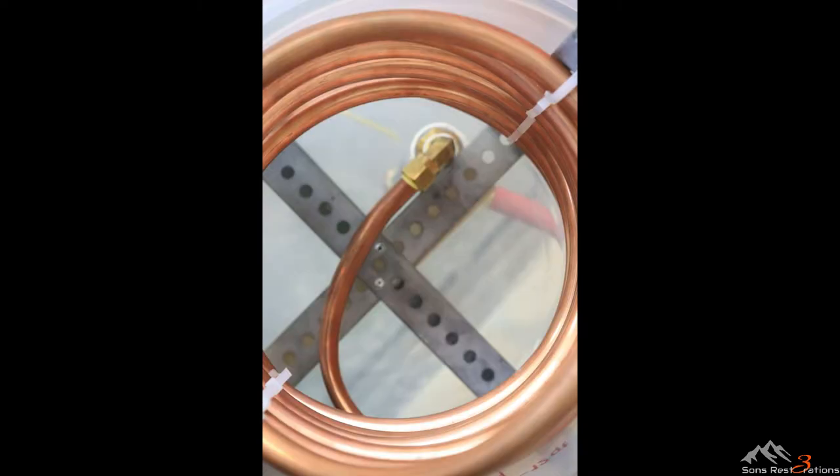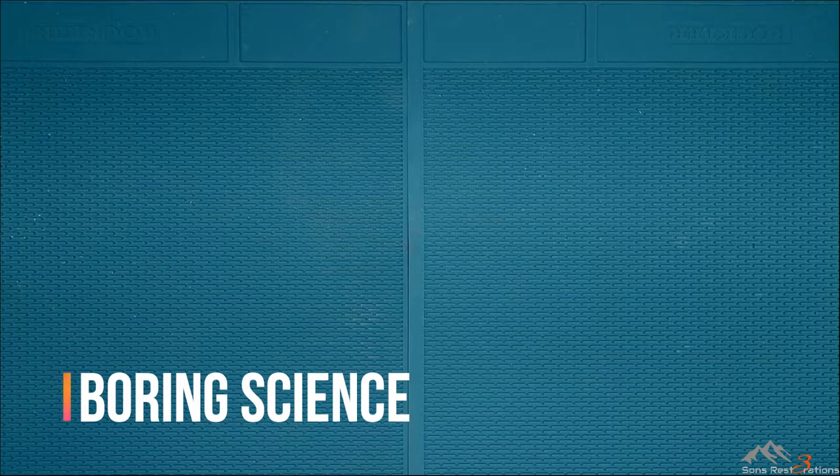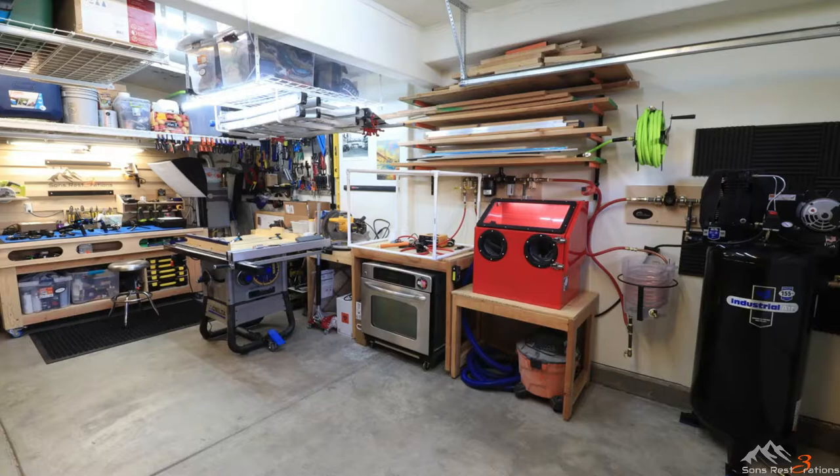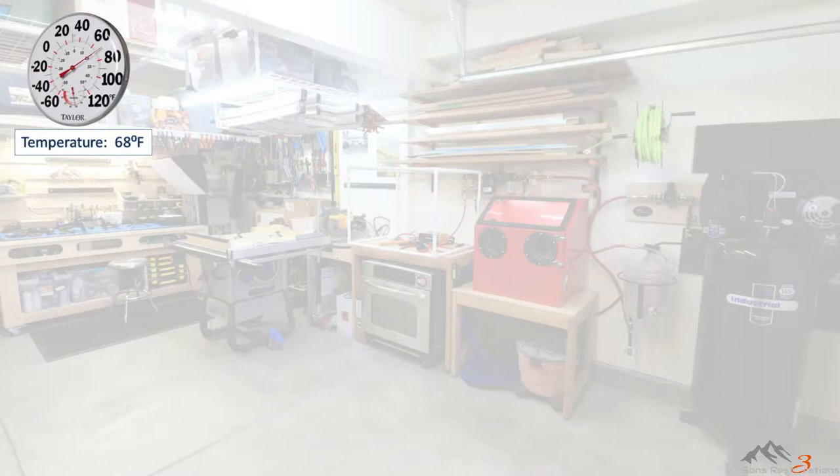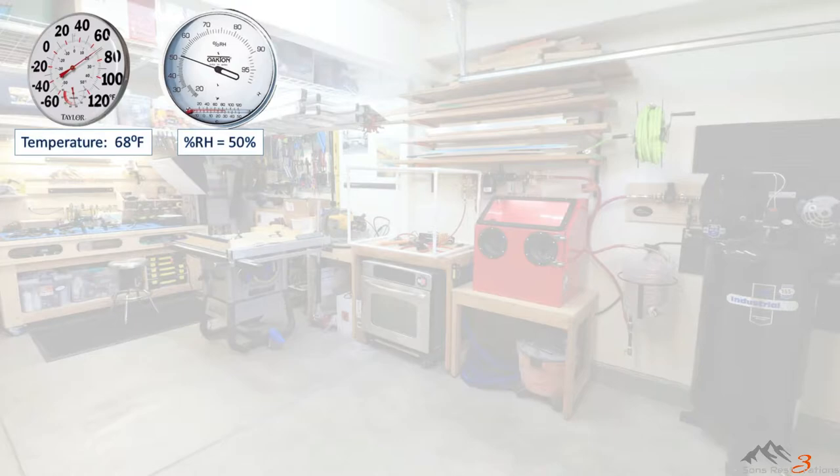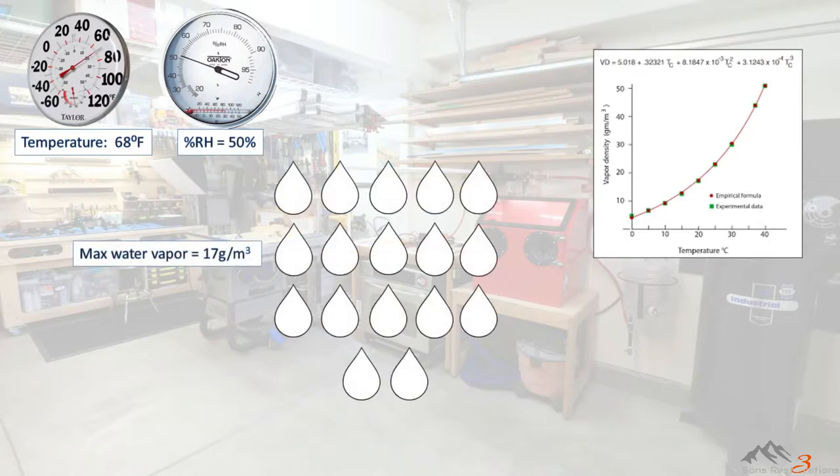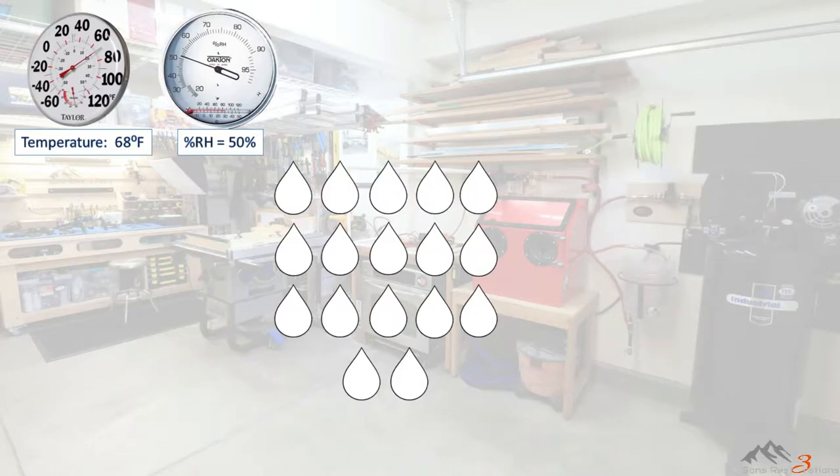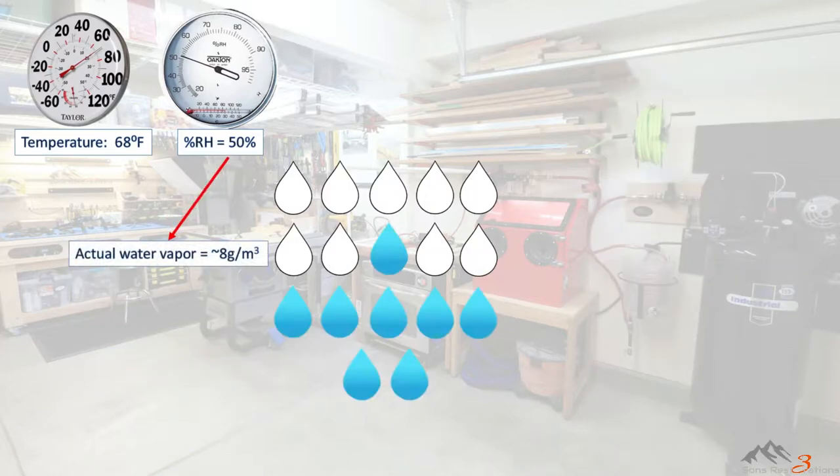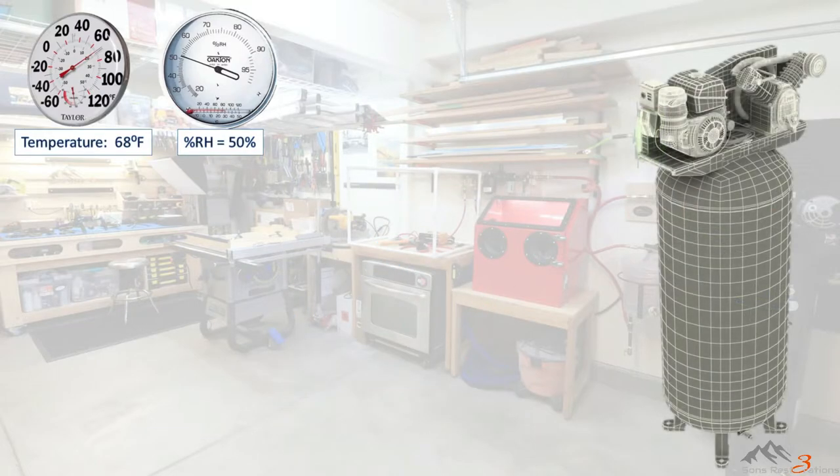First, however, I'd like to take a minute to discuss why there is water in the lines and why I believe my air dryer will be effective at removing much of it. Let's say the temperature of the air in my garage at normal pressure is 68 degrees Fahrenheit and the relative humidity is 50%. Using a saturation vapor density chart we can find that the maximum amount of water vapor that can be in the air at this temperature is 17 grams per cubic meter. However, since our air is only at 50% humidity, that means my air contains only half that amount of vapor, or about 8.5 grams.